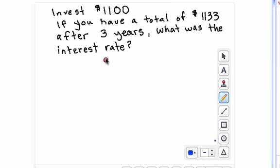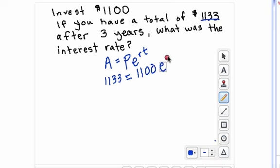So you can set this up using the formula. So remember that's A equals P times E raised to the RT power. So A is $1,133. That's how much you have after three years. P is what you initially started with, which was $1,100 times E to the R. You don't know what R is, and T times three.